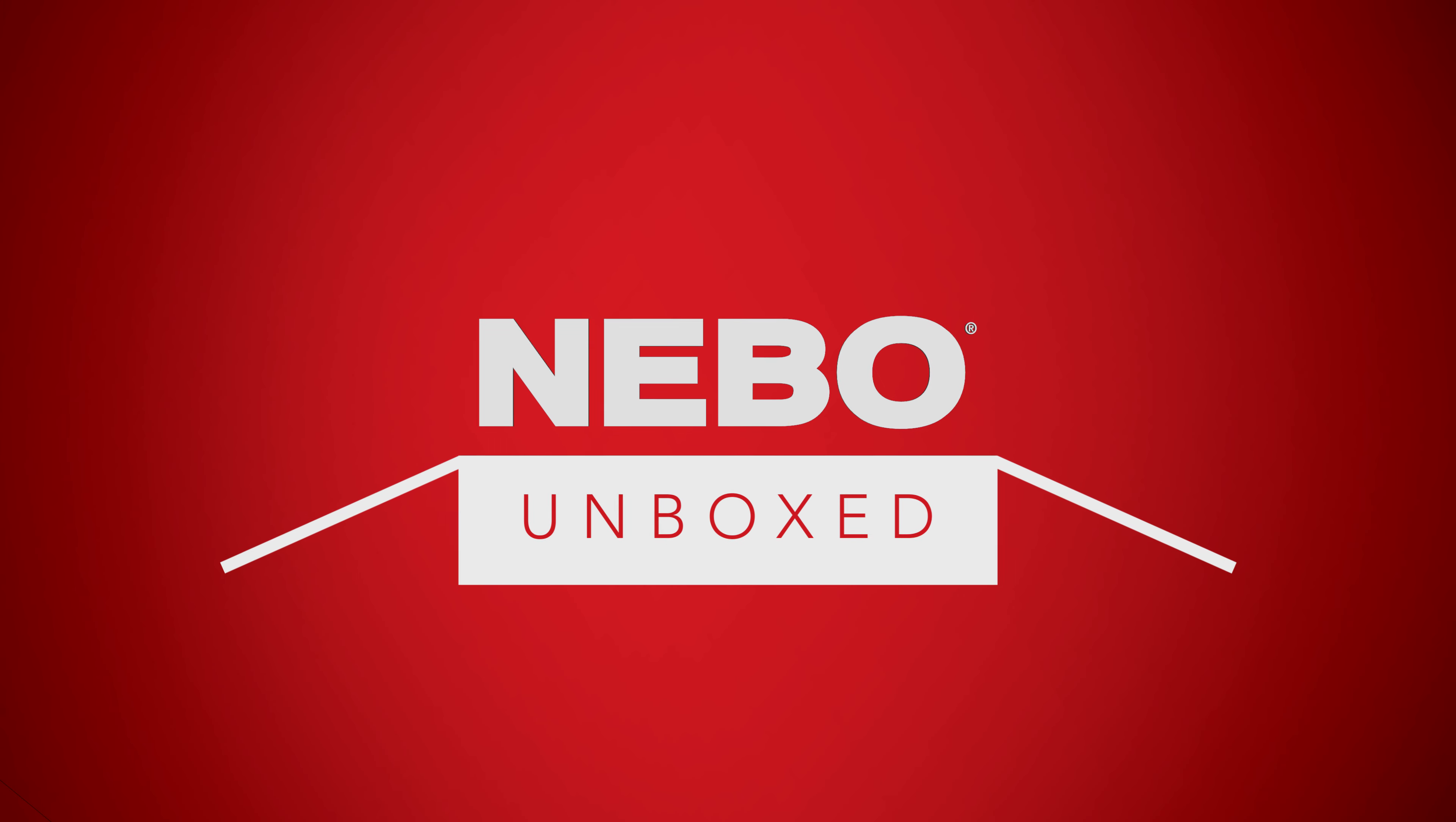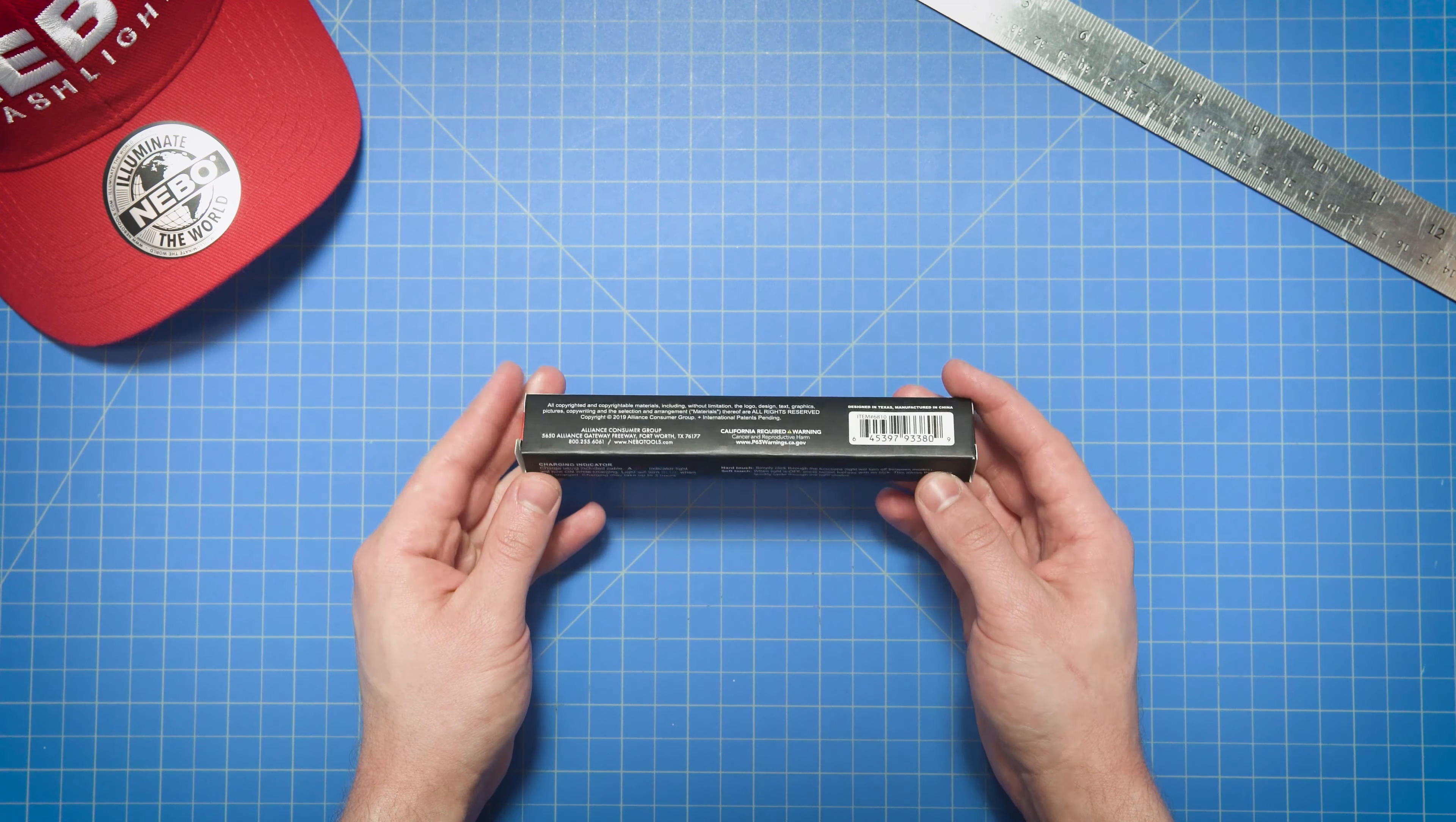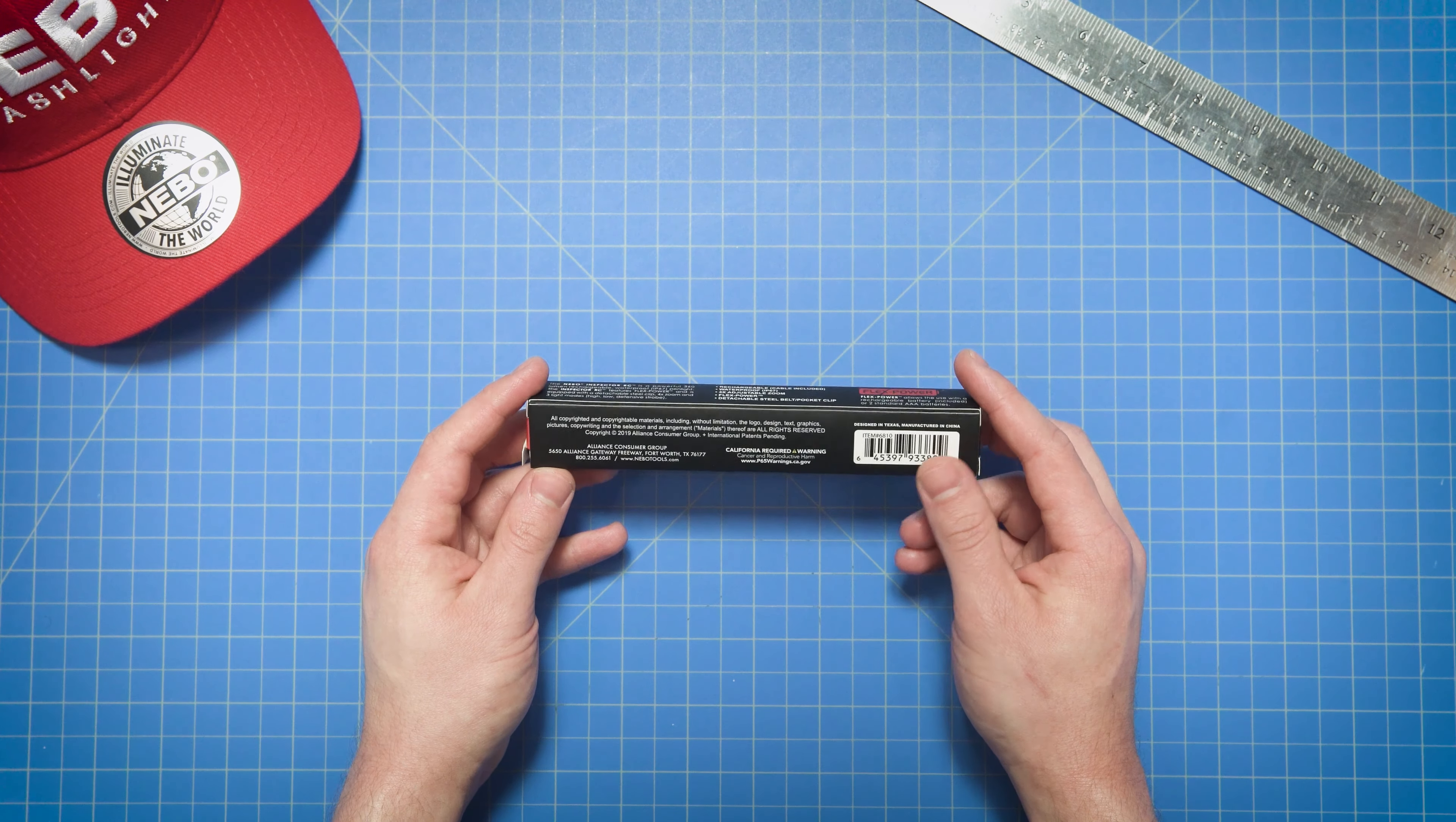Hello everyone and welcome to another episode of Nebo Unboxed. I'm Zach and today I'm unboxing Nebo's Inspector RC. It's a rechargeable LED flashlight that uses FlexPower, meaning it can be powered by the included rechargeable battery or you can use two regular alkaline AAA batteries.